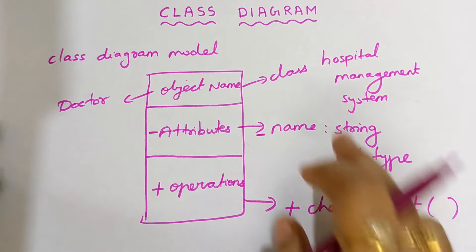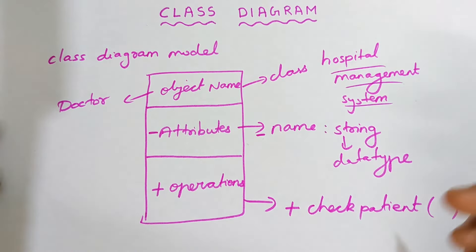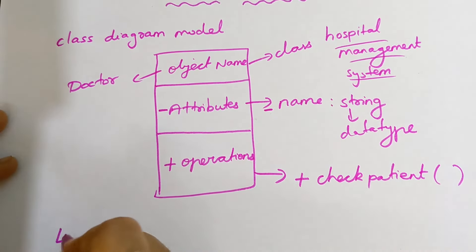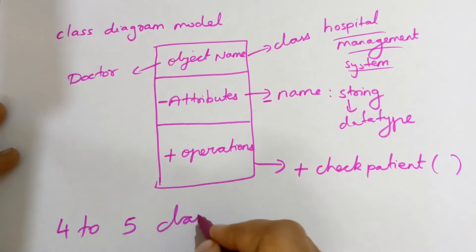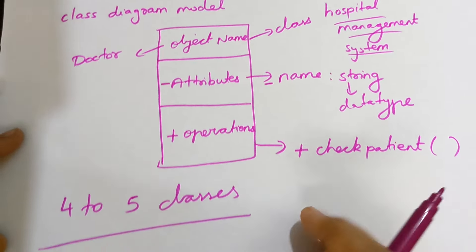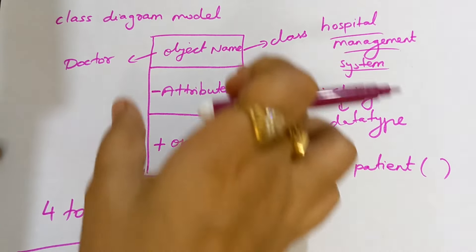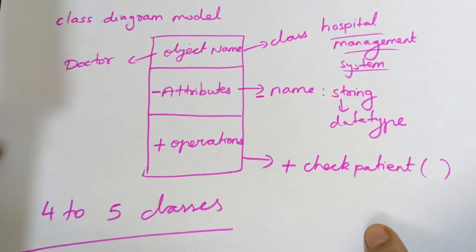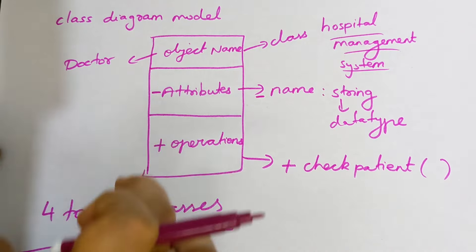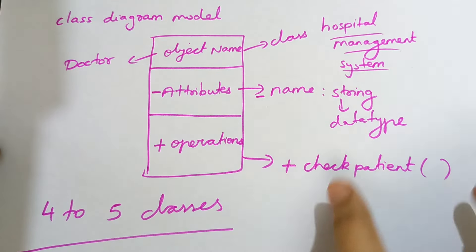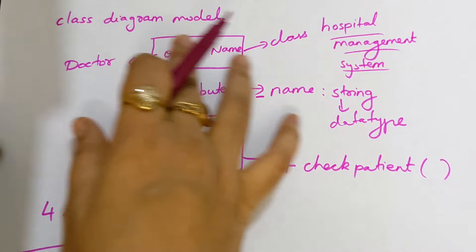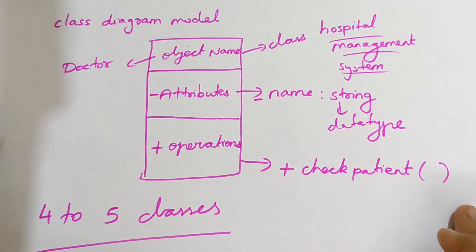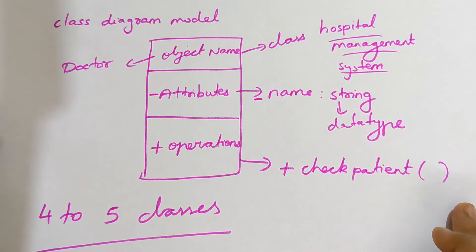Whenever a topic is given like hospital management system and you are asked to draw a class diagram, you have to create at least 4 to 5 classes. For example: doctor class, patient, hospital, staff, and drugs — like this, create 5 or 4 classes at least in order to draw a class diagram. Then only it will be very clear and neat. For a 10-marker question, you have to draw at least 4 to 5 classes to be given that many marks.